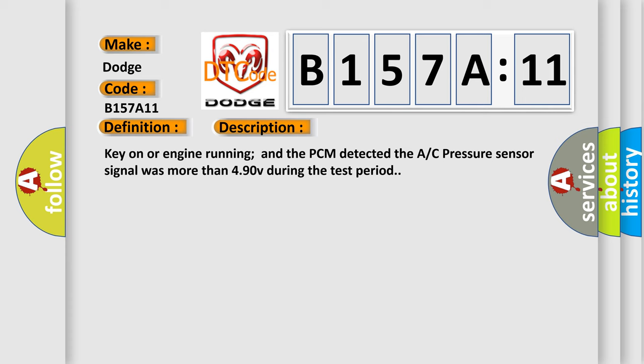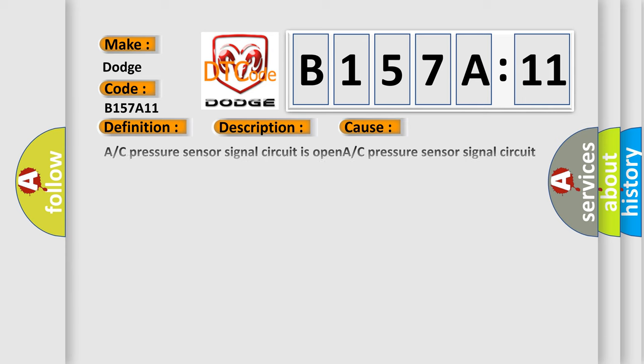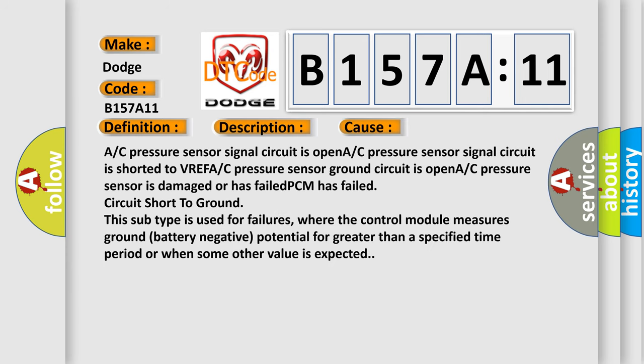This diagnostic error occurs most often in these cases: A/C pressure sensor signal circuit is open, A/C pressure sensor signal circuit is shorted to VREF, A/C pressure sensor ground circuit is open, if an A/C pressure sensor is damaged or has failed, PCM has failed, or circuit short to ground. This subtype is used for failures where the control module measures ground battery negative potential for greater than a specified time period or when some other value is expected.